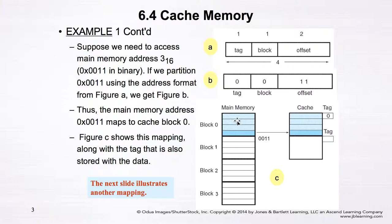So the block in main memory at address 0011 — which is three — is in block zero, at the last offset within that block. Based on the block field being zero, it maps to block zero in the cache. The tag for this entry is zero, so the cache block zero is associated with tag zero. That's how a block in memory is mapped into a block in the cache using the three fields.